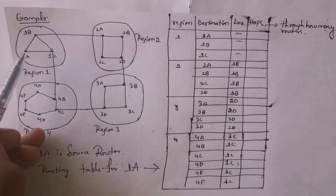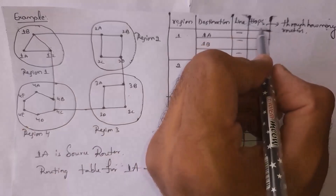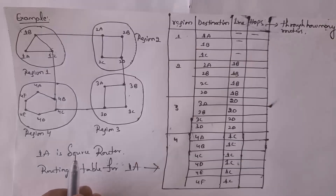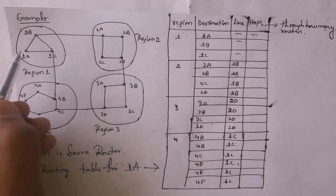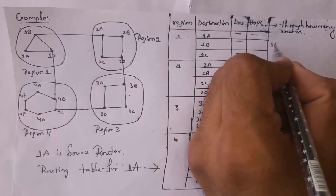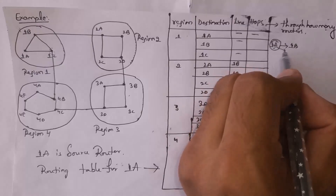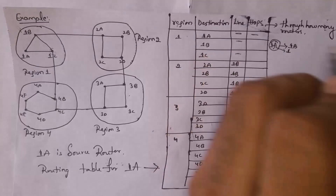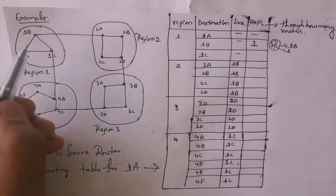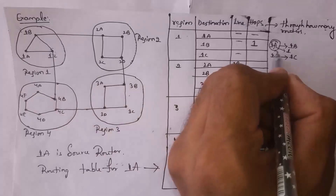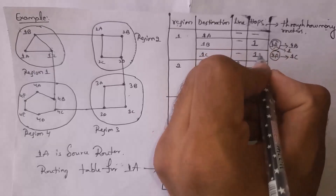The 'hop count' is the number of routers data must pass through to reach its destination. If router 1A communicates with itself, no hops are needed. To reach 1B, data passes through router 1A directly — hop count is 1. To reach 1C, it also communicates directly through router 1A — hop count is 1.